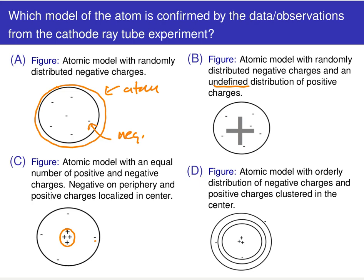Or choice D — an atomic model with an orderly distribution of negative charges in some sort of shell arrangement. I want you to be careful: only use the results from J.J. Thomson's experiment.